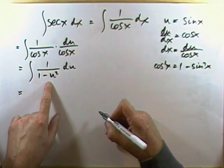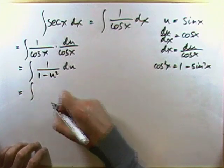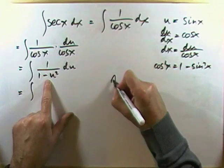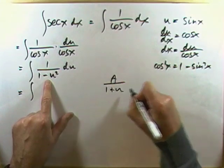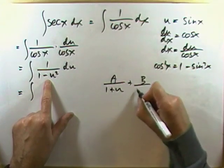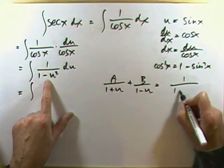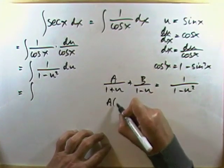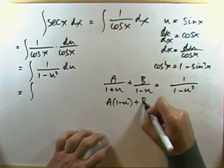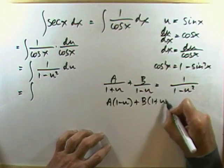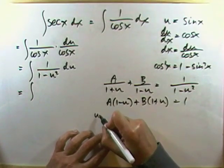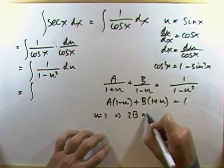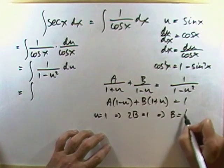The denominator can be factorised, so I could use partial fractions to split that up. I'm going to let A over 1 plus u plus B over 1 minus u equal this rational expression. Multiplying throughout, I've got A times 1 minus u plus B times 1 plus u equals 1. If I let u equal 1, the A term gets knocked out and I'm left with 2B equals 1, so B equals one half.